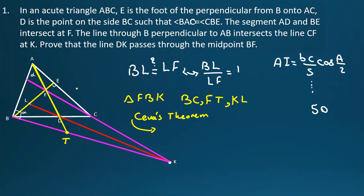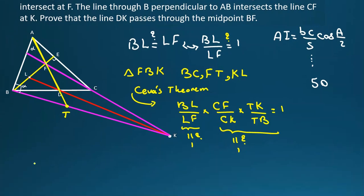And I want to use Ceva's theorem. So let's write. BL over LF times, LB, or I can write LB, LF times the next one. CF over CK. So it will be CF over CK times TK over TB. TK over TB equal to 1. Now we want to prove BL over LF is 1. Why it is 1? We want to prove why it is 1 because we know this times this is 1. So we should prove why it is 1. So it is equivalent. Let me write CF over CK times TK over TB is 1. And it is equivalent that CF over CK equal to TB over TK.